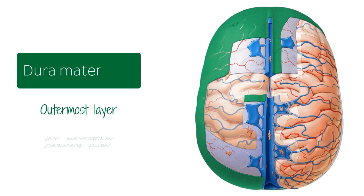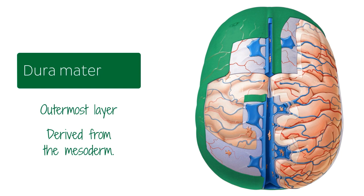It is derived from mesoderm and it forms the dural venous sinuses, which transfer blood from the superficial veins of the brain to the jugular vein and then to your heart.